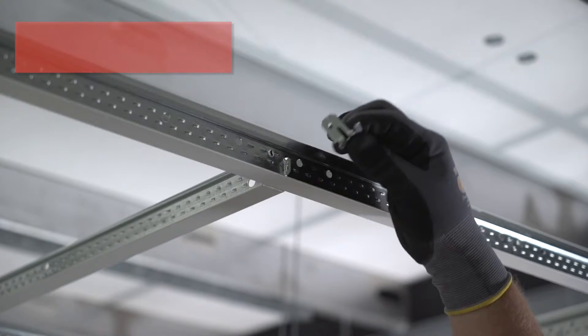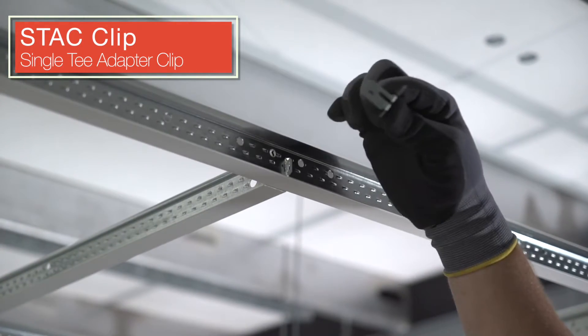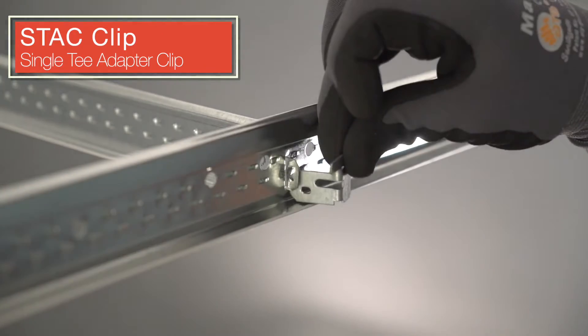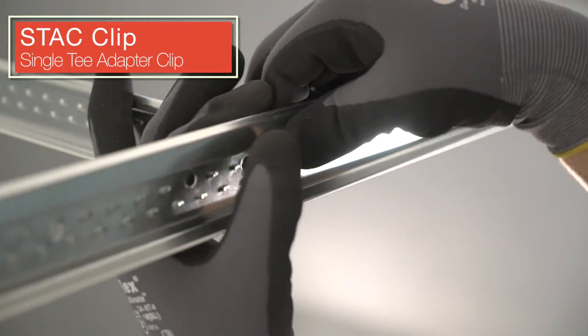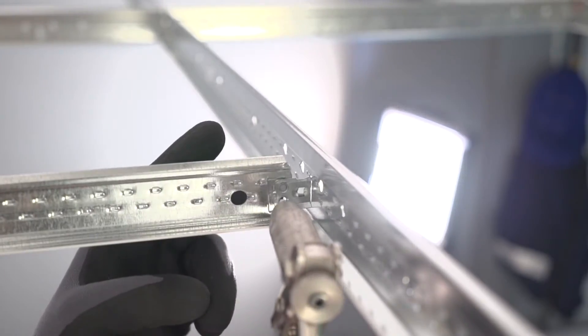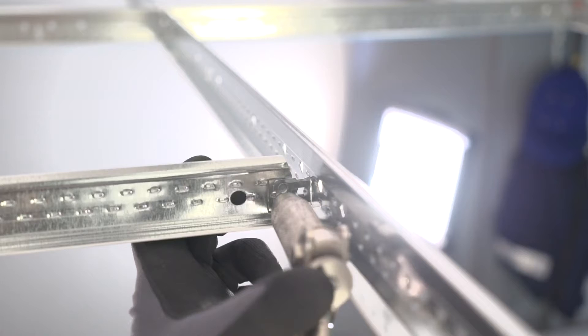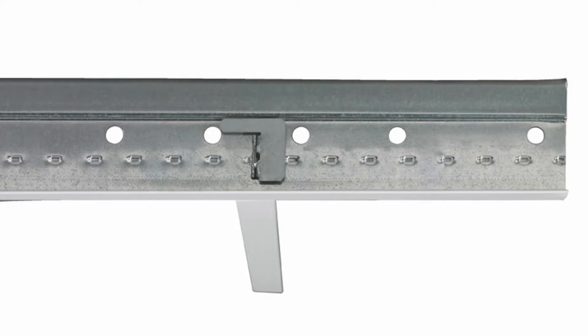When installing 2x4 light fixture openings, it is important in seismic areas to secure all unopposed cross tee locations. The STAC clip is a seismically tested and approved solution for securing any unopposed stab cross tees typically found at fixture locations or increasingly popular in staggered grid layouts.